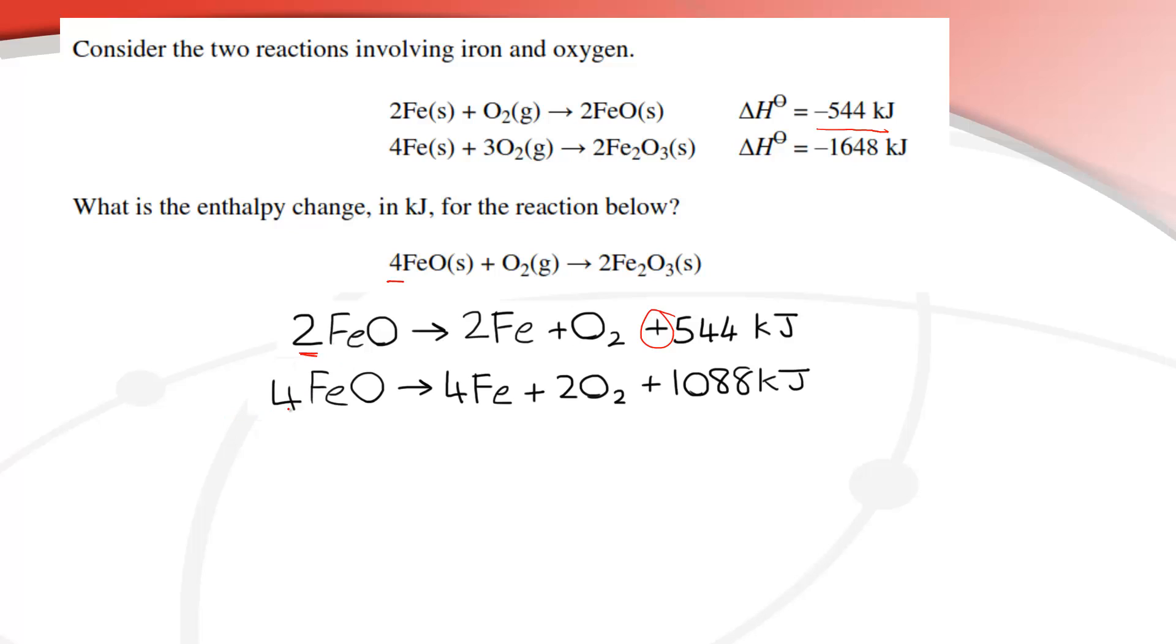So that gives us 4FeO and then 4Fe plus 2O2, and I'm going to put a line through that equation now because we're now finished with that equation there. But also I have doubled the enthalpy change from 544 to 1088 kilojoules.